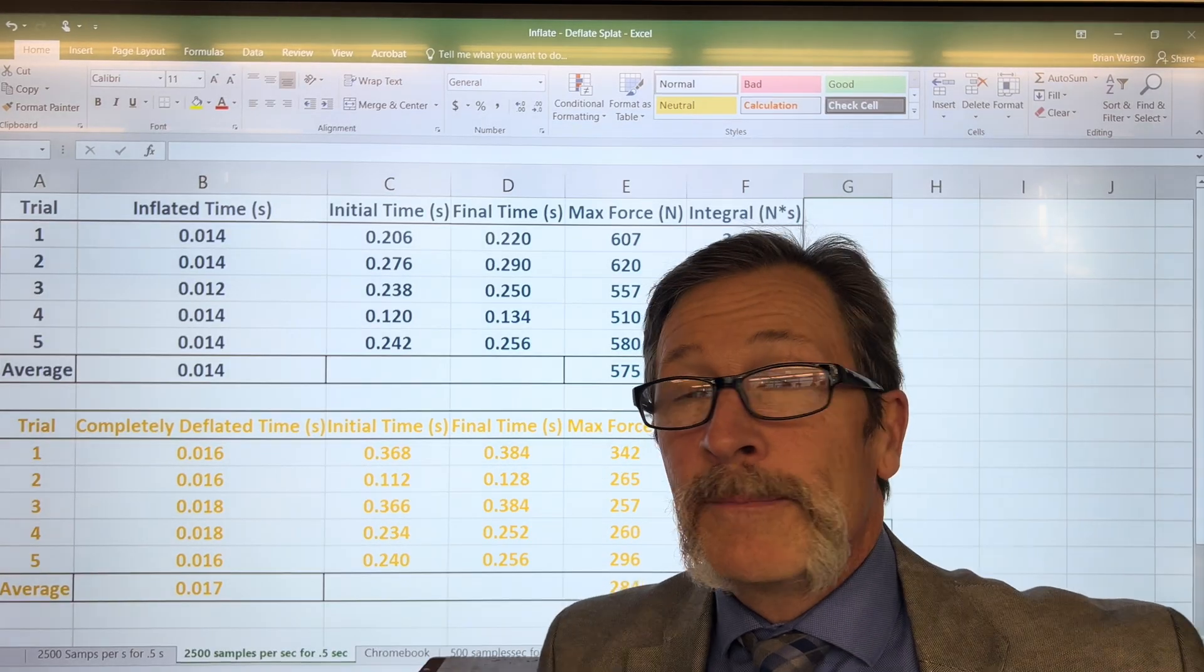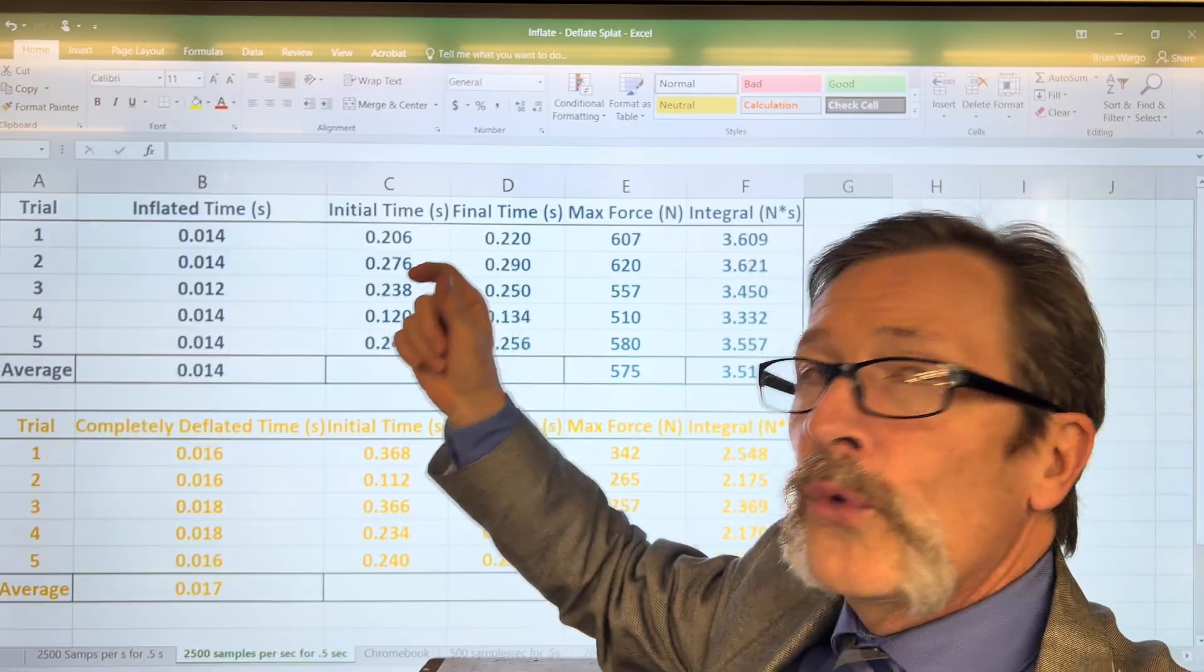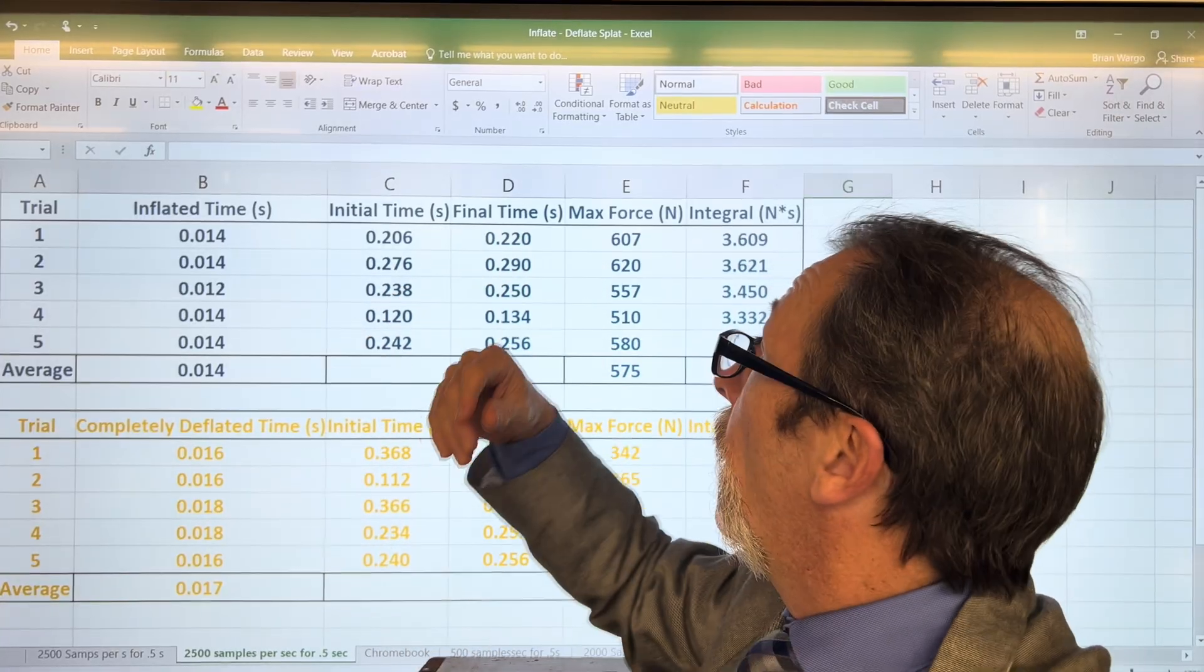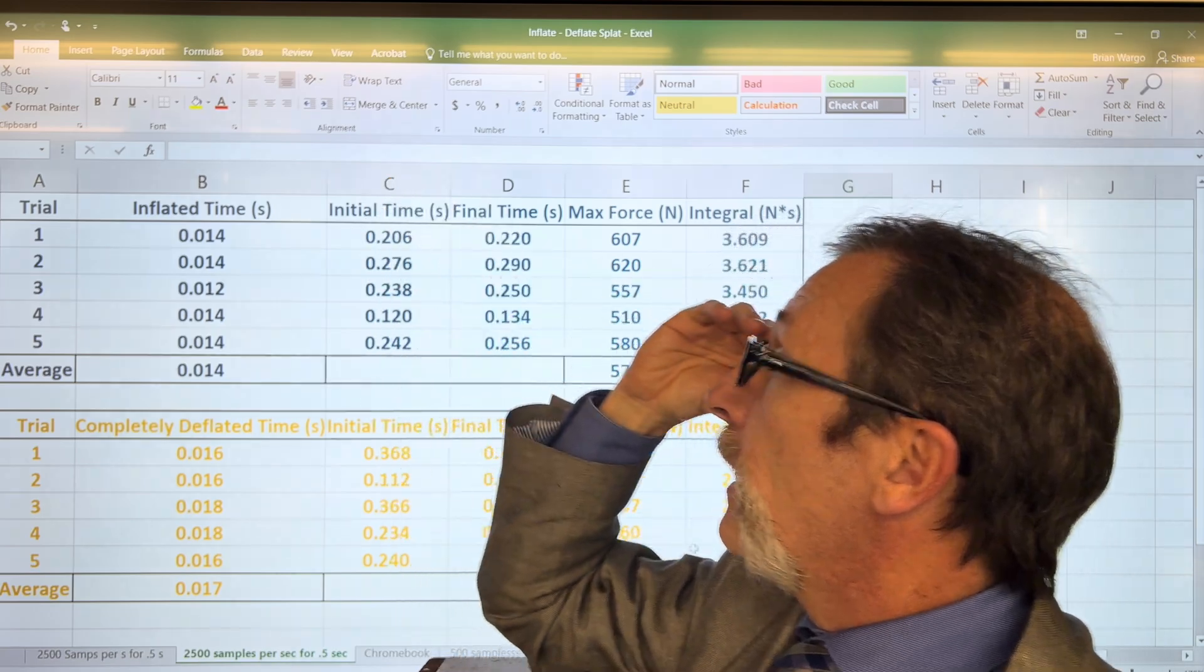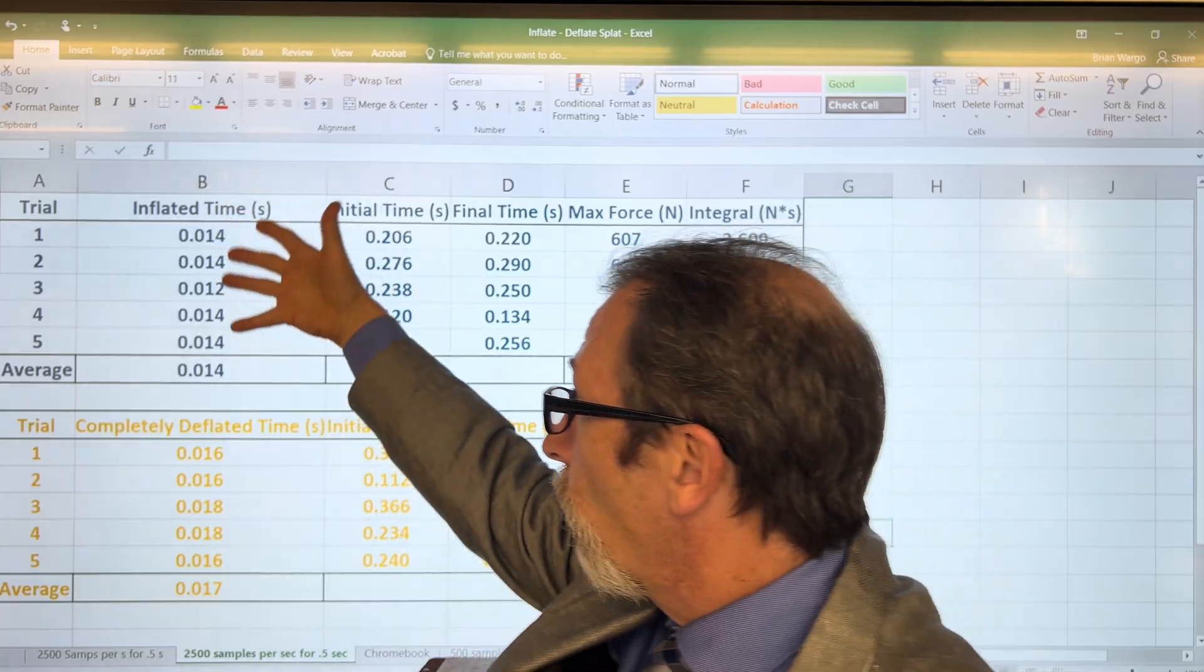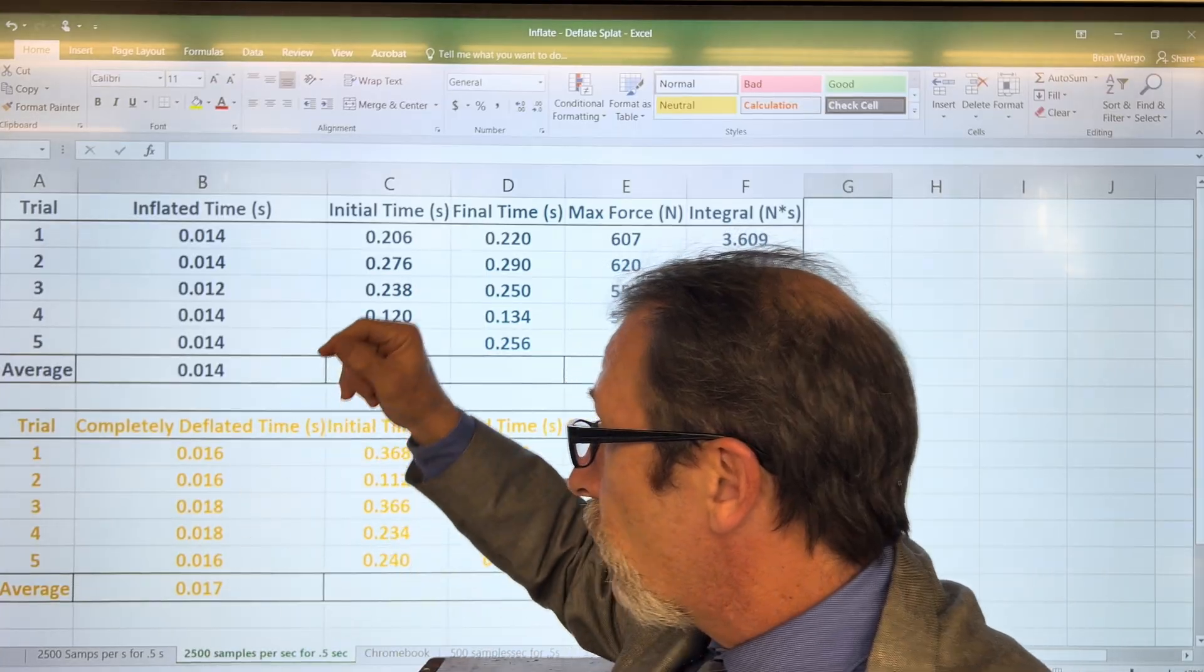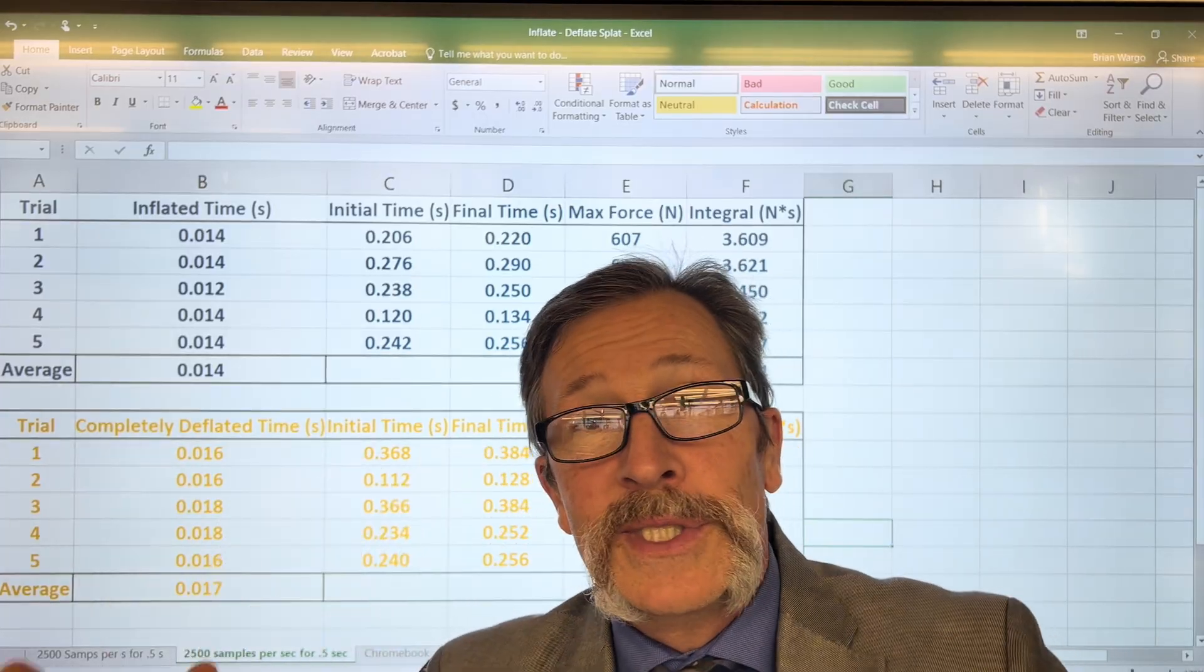I have all five of my trials loaded up here. Over five trials, the inflated ball time averaged 0.014 or 14 milliseconds. And then we have the completely deflated case, and on average those cases turned out to be 0.017 or 17 milliseconds. What does this tell us?